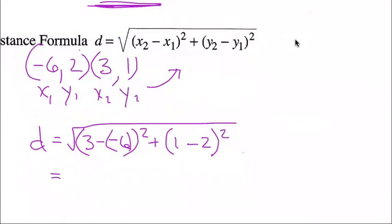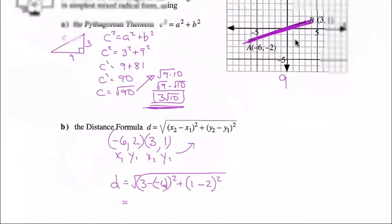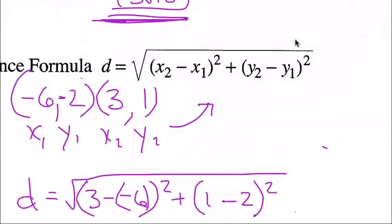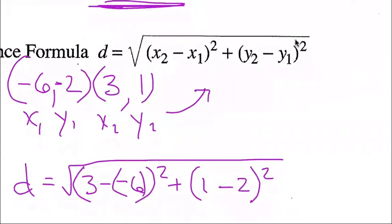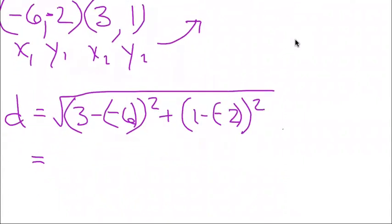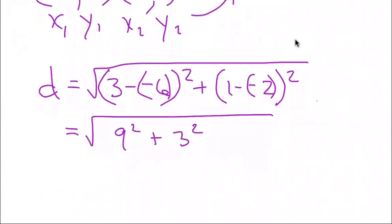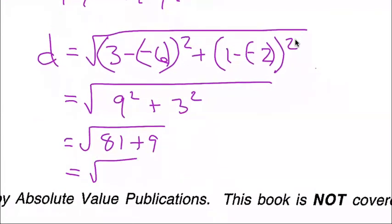Substituting the values: d equals the square root of (3 minus negative 6) squared plus (1 minus negative 2) squared. That gives us the square root of 9 squared plus 3 squared, which is the square root of 81 plus 9, which is the square root of 90, which equals 3 square root 10. You can see it gives the same answer as the Pythagorean theorem method.